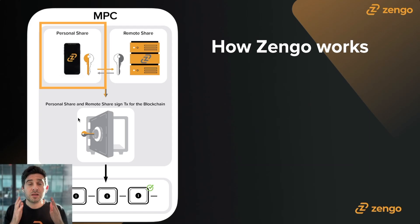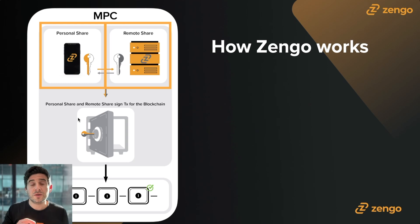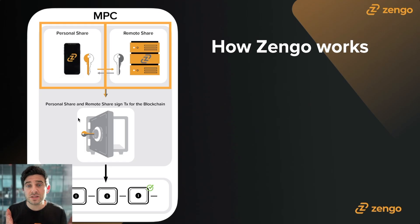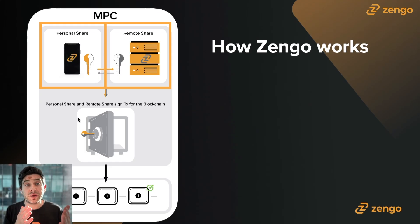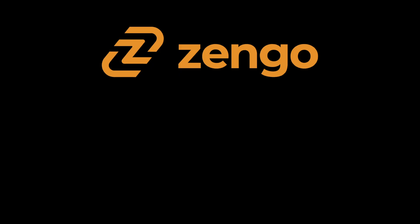The personal share is the only share that can originate a transaction. The remote share is there to help co-sign a transaction. Then the blockchain accepts the transaction like it would any transaction — it doesn't know that this is coming from an MPC wallet versus a traditional wallet.